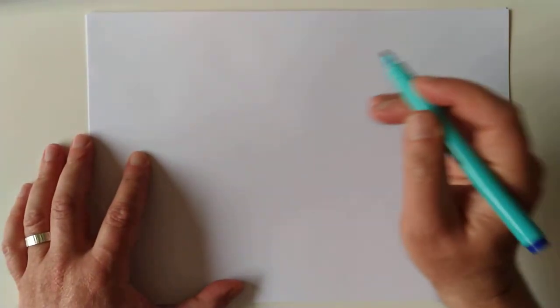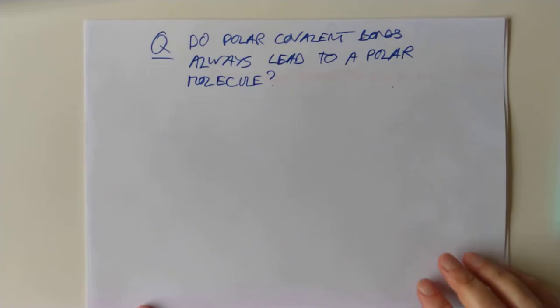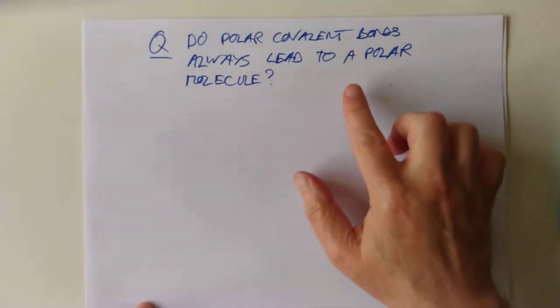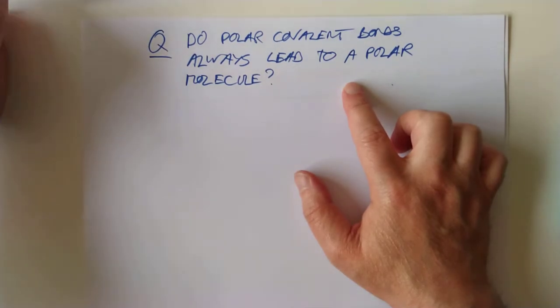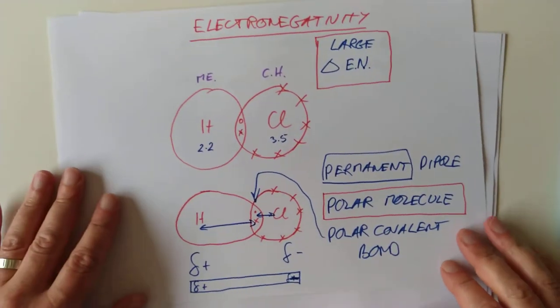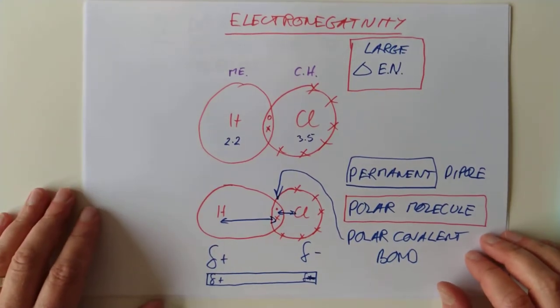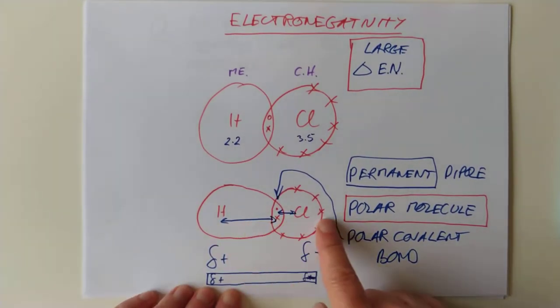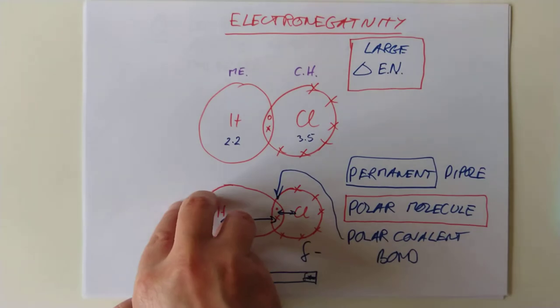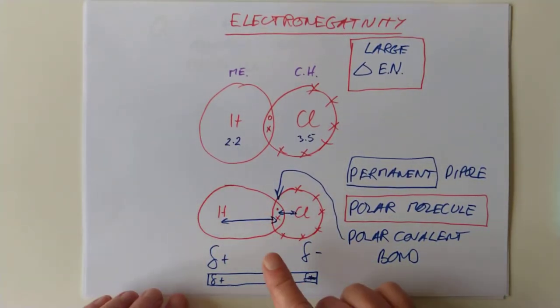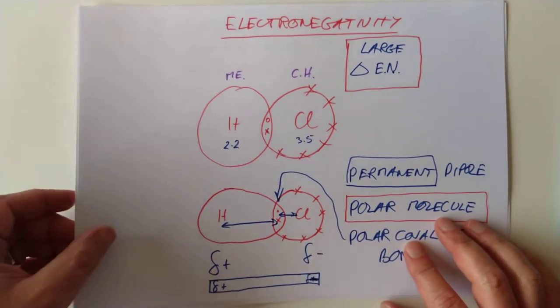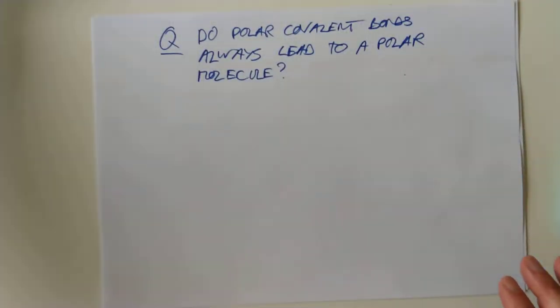There's one more thing I need to throw at you. Here's a question. Okay, so here's the question of the day of course. Do polar covalent bonds always lead to a polar molecule? In the last example, the answer was yup. And you might be tempted to say, well of course they always do. This bond here is polarized. There's more negative here than here. That means the molecule is polarized. Yeah, but it's a pretty simple molecule though, isn't it? Maybe there's something else at play here.